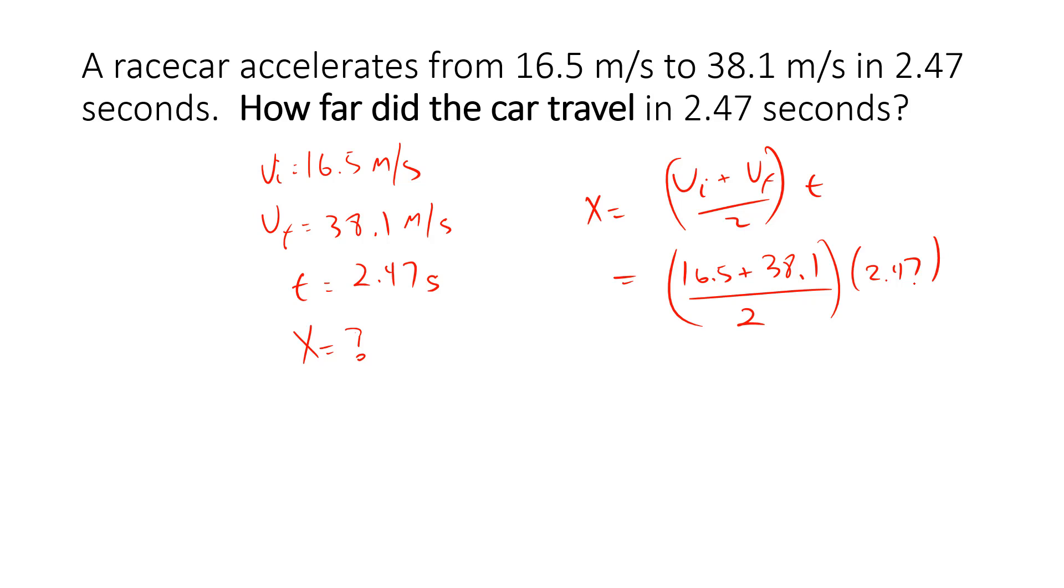When you do that, 16.5 plus 38.1 equals 54.6. We divide that by 2 times 2.47, and I get x equals 67.4 meters. The unit for displacement is meters, and I don't know the actual direction, so it would be forwards - they want the vector displacement instead of just the distance.